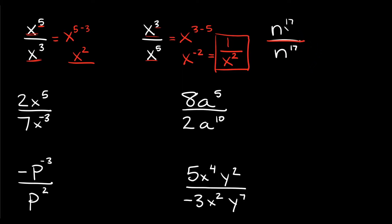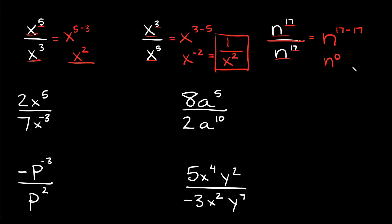So how would you do that? Well, it's still the same process. We've got the same base — n and an n — so you just keep the n and then you subtract the exponents. The top one always goes first, so 17, and then we're going to subtract the bottom one, which is also 17. So 17 minus 17 is equal to 0, so here we're going to have n to the 0 power. And anything raised to the 0 power is equal to 1 — so we still get back to that same answer.